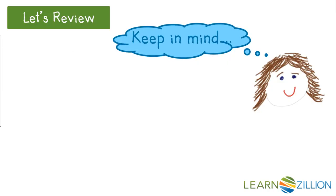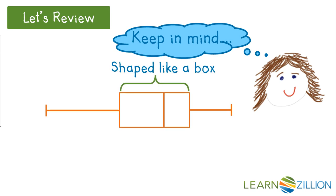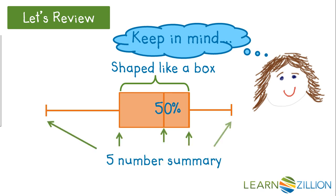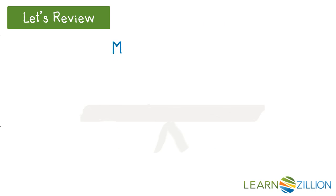Let's review. There are three things to keep in mind regarding a box plot. First, it's shaped like a box. Second, 50% of the data is inside the box. And third, the five number summary provides the structure or framework for the box.